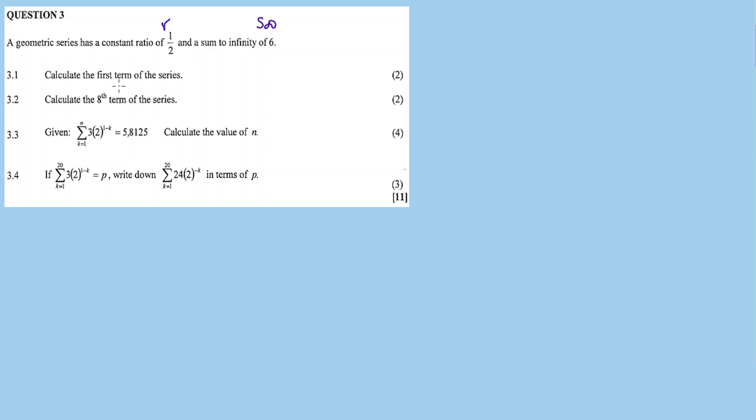Now question 3.1, calculate the first term of the series. We are given two values: R, the common ratio, as well as the sum to infinity. We need to find a value for A. We're going to use the sum to infinity formula. We substitute and then make A the subject of the formula. What is 1 minus 1 over 2? It's 1 over 2, then cross multiply. 6 times a half equals A. A is equal to 3. So the first term is equal to 3.